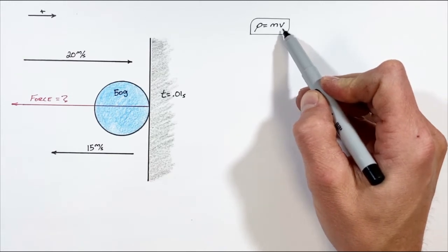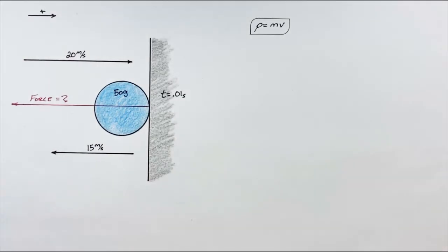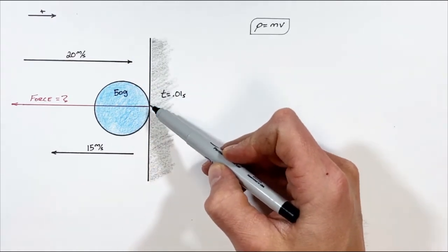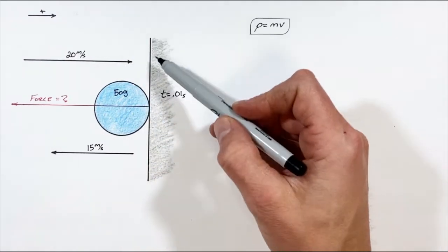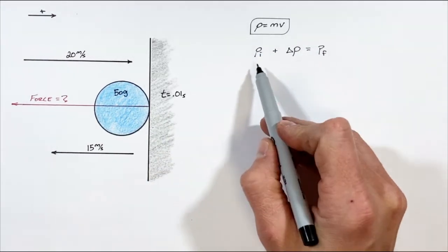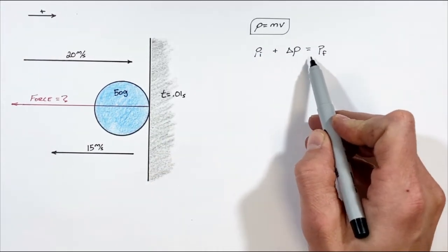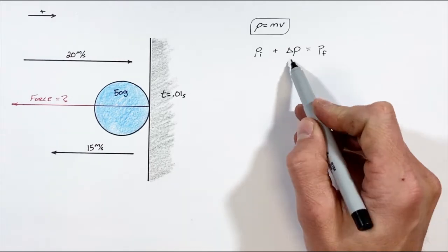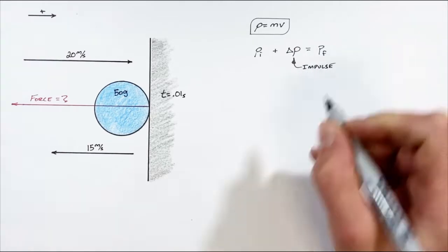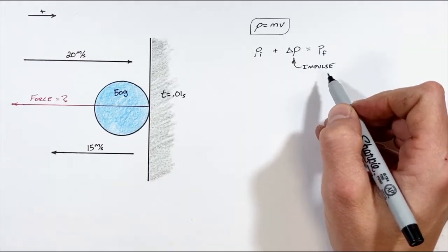where m is the mass and v is the velocity. We're going to relate the initial and final momentum of the ball to the change in momentum as it's in contact with the wall. So we have: initial momentum plus change in momentum equals final momentum. This change in momentum is what we call impulse, and that's the first thing we want to solve for.